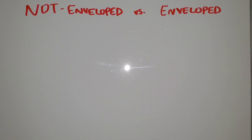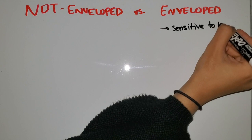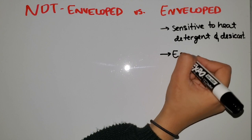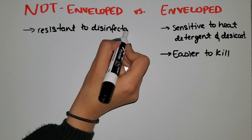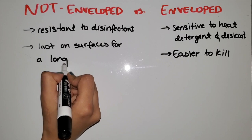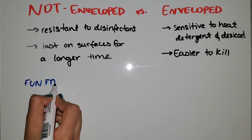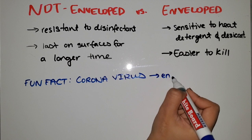I want to make a clear distinction between non-enveloped and enveloped structures. Enveloped viruses tend to be more sensitive to heat, detergent, and desiccation — they are usually easier to kill. Non-enveloped viruses are more resistant to disinfectants and last on surfaces for a longer time. A fun fact: coronavirus is actually an enveloped virus, and that is why it is so important to wash your hands.